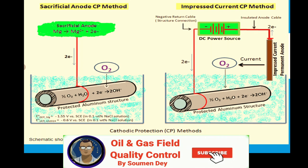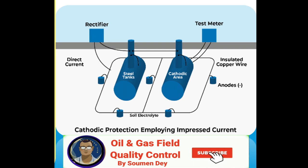Impressed current cathodic protection, or ICCP, is a corrosion protection system that consists of mixed metal oxide coated titanium anodes connected to an external power source. This power source provides the current that drives the electrochemical reaction required for cathodic protection. The external power source — often a DC power supply — provides the current necessary to drive this electrochemical reaction.